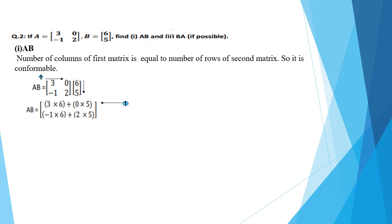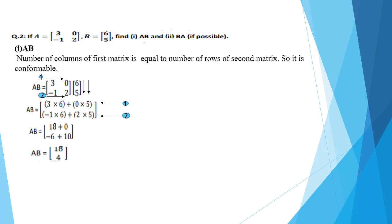You can see the multiplication: 3 into 6, plus 0 into 5. Now move to the second row: minus 1 into 6, plus 2 multiply 5. Multiplying the numbers: 3 times 6 is 18, plus 0 times 5 is 0. Minus 1 times 6 equals minus 6, plus 2 times 5 equals 10. Adding the products: 18 plus 0 equals 18, minus 6 plus 10 equals 4. The greater value has positive sign, so positive 4.